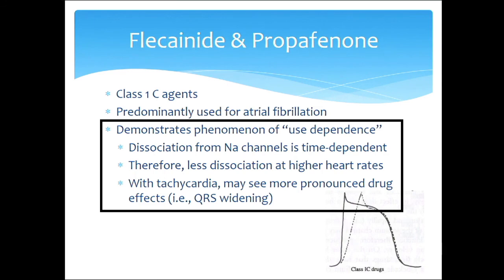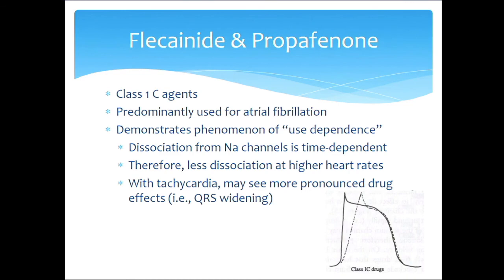As a result, for a drug like flecainide, you might have a therapeutic dose and everything might be fine. Then if the patient develops atrial fibrillation with tachycardia — despite being on flecainide — the whole QRS complex can widen out for exactly this reason, whereas at baseline the QRS complex may have remained narrow. So with normal flecainide therapy, the QRS should be narrow. If the patient develops tachycardia, you could see QRS widening. Use dependence — that's the one buzz phenomenon to know for flecainide and propafenone.